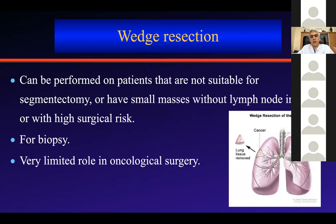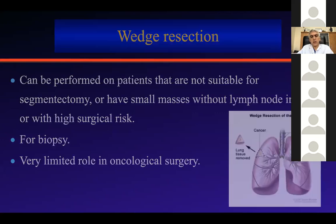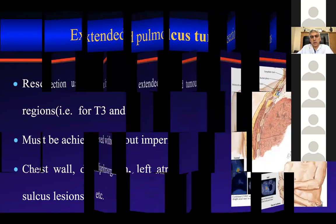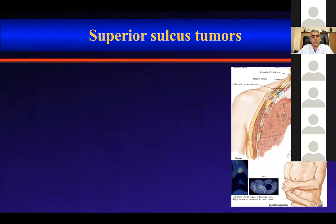Extended pulmonary resections involve pulmonary resection extended to adjacent structures like chest wall, diaphragm, left atrium, superior vena cava, or superior sulcus. Speaking of superior sulcus, it is a specific tumor. Any primary lung cancer presenting with constant pain, miosis, ptosis, and ophthalmia can be seen because of invasion of the brachial plexus. We must confirm N0 disease because N2 patients are inoperable.